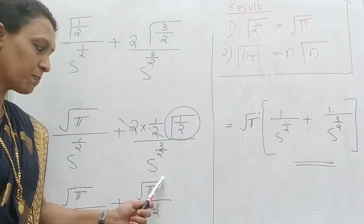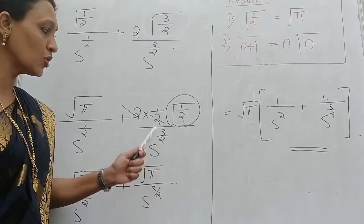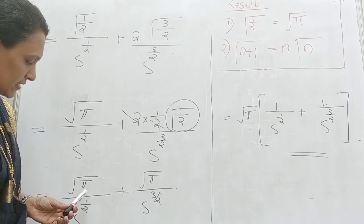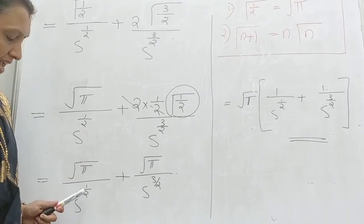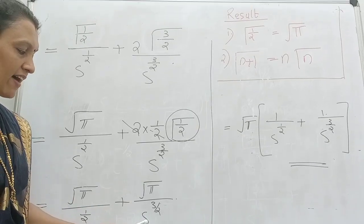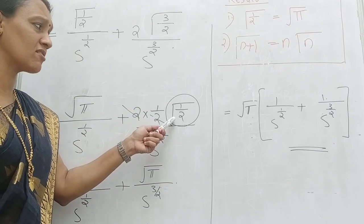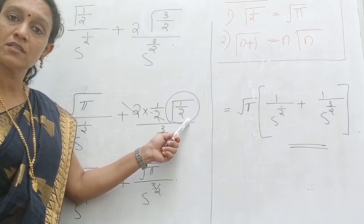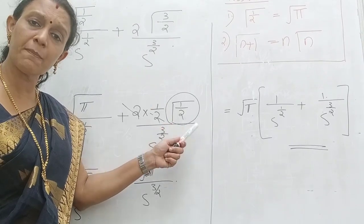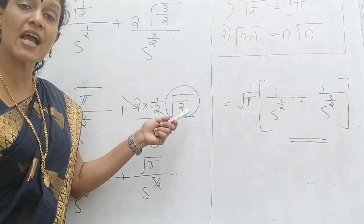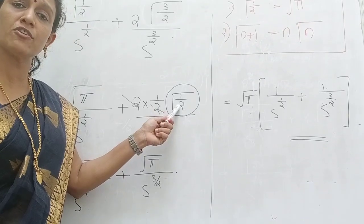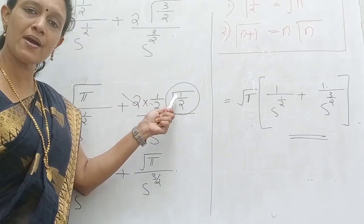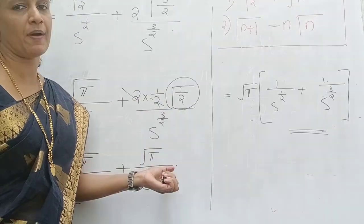Therefore this becomes root pi divided by S raised to 3 by 2. Note: if instead of gamma 1 by 2 you had gamma 1 by 4 or gamma 1 by 3, you cannot simplify further — keep those values as they are. Only for gamma 1 by 2 can you replace it with root pi.